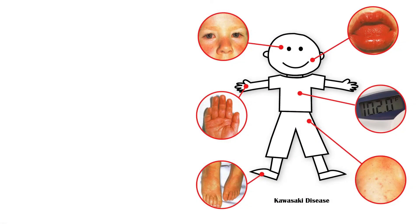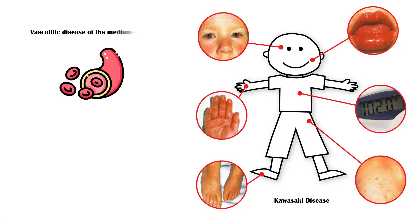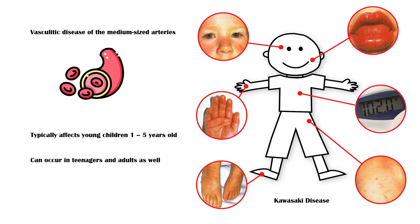Kawasaki disease is a vasculitic disease of the medium-sized arteries. It typically affects young children between one to five years of age. However, rarely it can occur in teenagers and adults as well. In this video, I will discuss the most common signs and symptoms of Kawasaki disease.